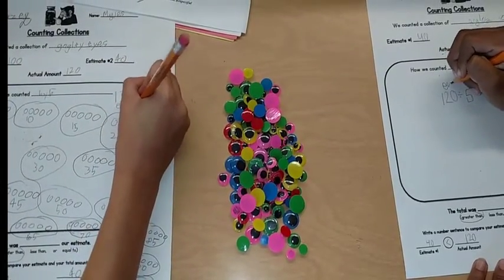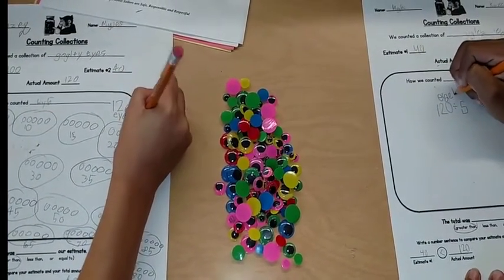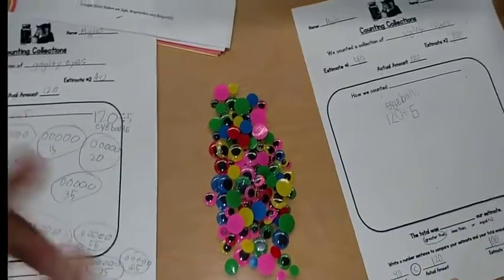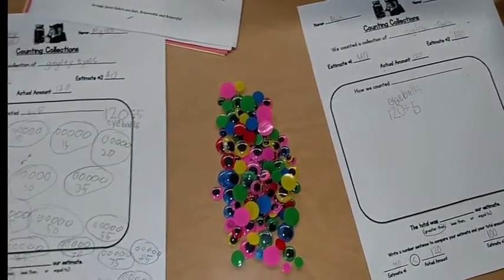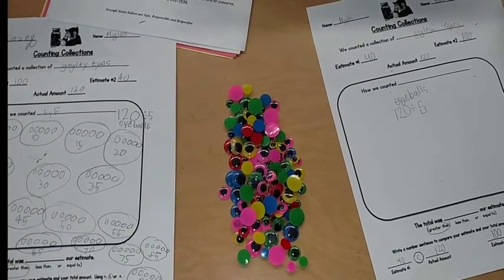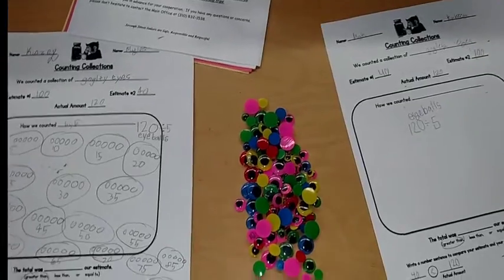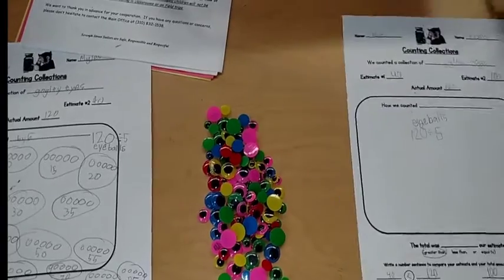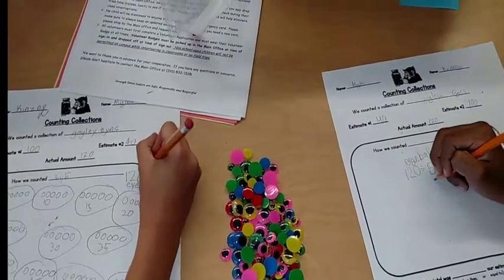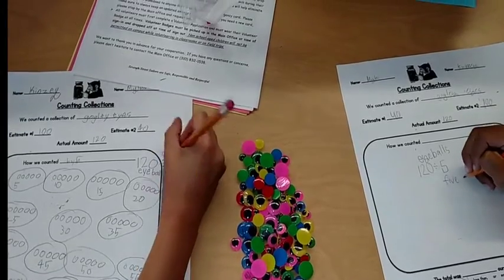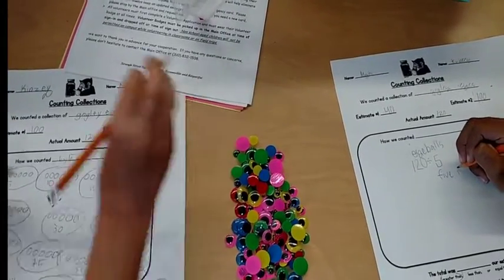Let's label that eyeballs. And then the five is how many you put in each group. How many did you put in each group? Five. Okay, so then underneath the five or on top of the five you can put five in each group. Oh no, not right five, right. Oh sorry, you're right, go ahead, you're right.